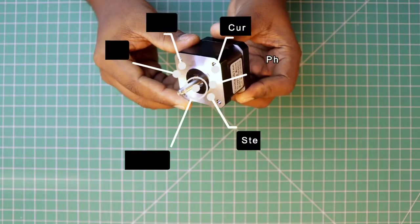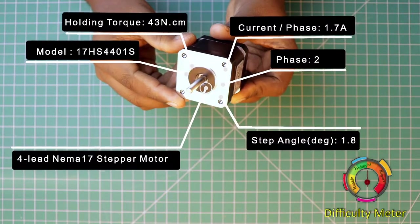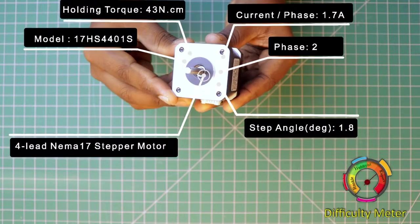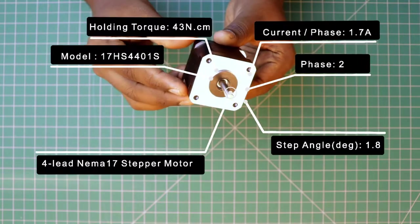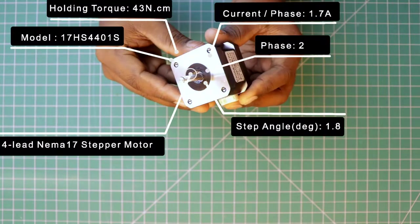Here is our stepper motor. It is a two-phase NEMA 17 stepper motor. It has a holding torque of 43 Newton centimeter. The motor rated current is 1.5 amps. Let's see how to drive this motor.